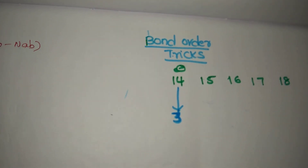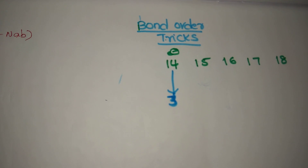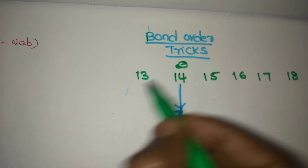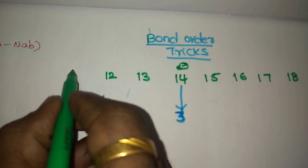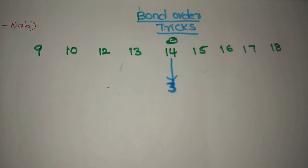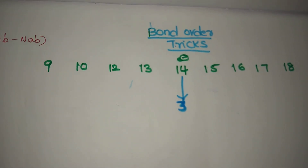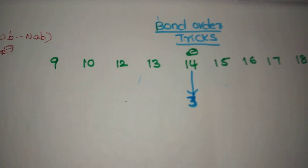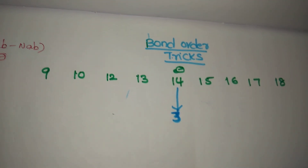Maximum they will ask up to 18 electrons; 19 and 20 electrons also have bond order zero. Also write going the other direction: 13, 12, 10, and 9 electrons. In the examination they ask between 9 and 20 electrons.